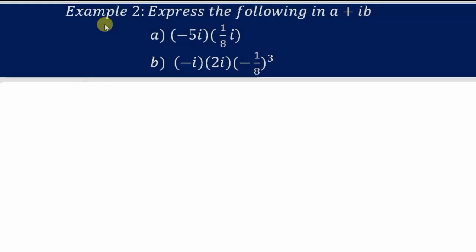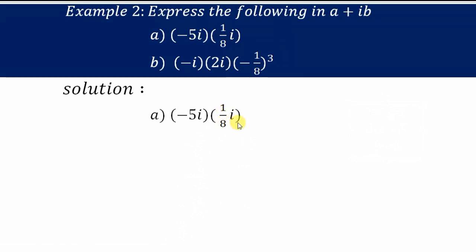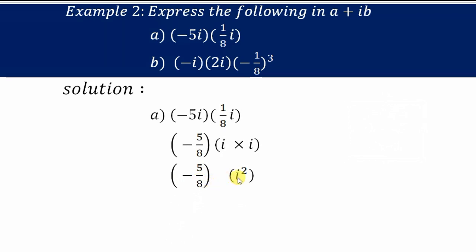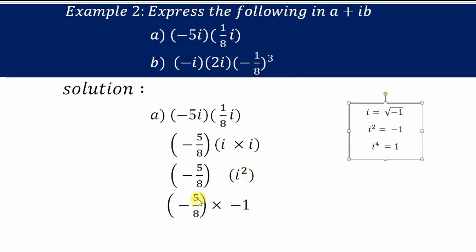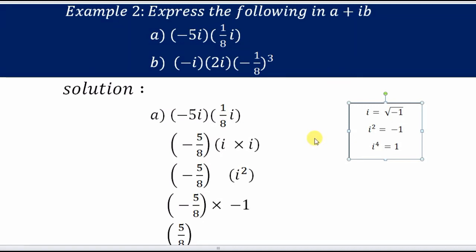Example 2: express the following in a + ib form. First: (−5i)(1/8i). Separating real and imaginary parts: multiply −5 × (1/8) = −5/8, and i × i = i². Since i² = −1, we get −5/8 × (−1) = 5/8. As there is no imaginary term, we write this as 5/8 + i·0.